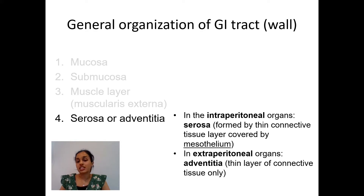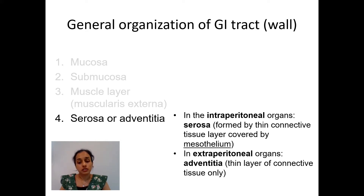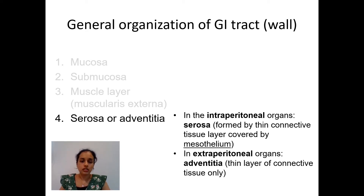The outermost layer is the serosa or adventitia. For intraperitoneal organs enclosed by peritoneum — like the stomach and small intestine — the outermost layer is covered by thin connective tissue and simple squamous epithelium called mesothelium, forming the serosa. For extraperitoneal organs like the duodenum and esophagus, the outermost layer is the adventitia, which has just connective tissue without mesothelium.